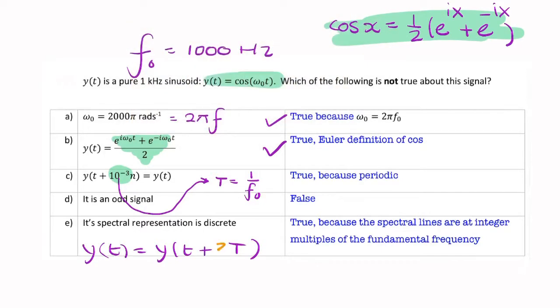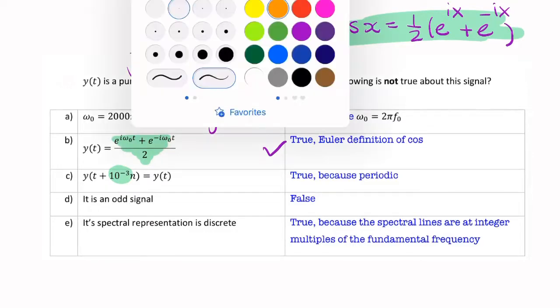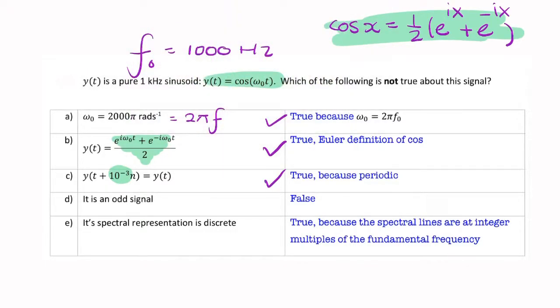And then we can put a 3 in there, or we could put a 10 in there. That's all acceptable because it's a periodic signal. So, multiples of T are all acceptable. That too is a true statement.